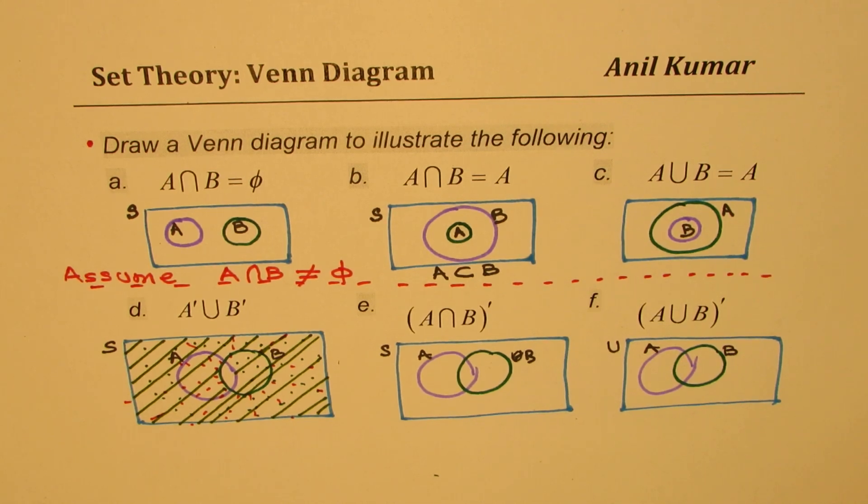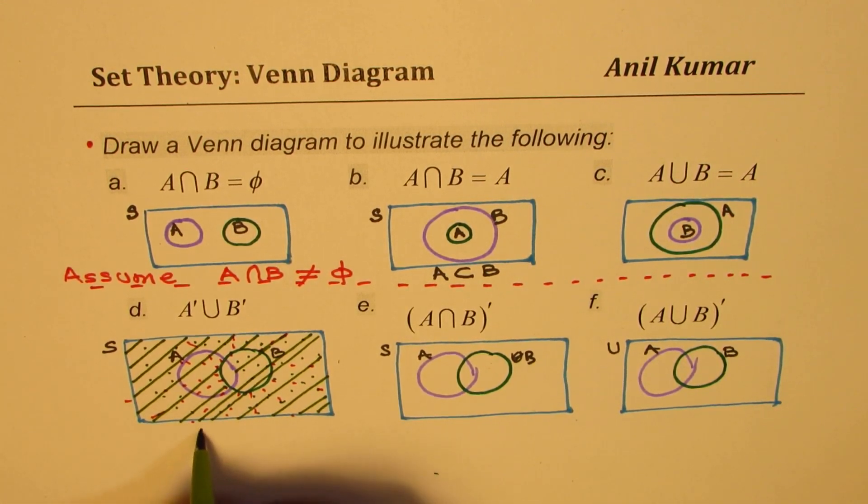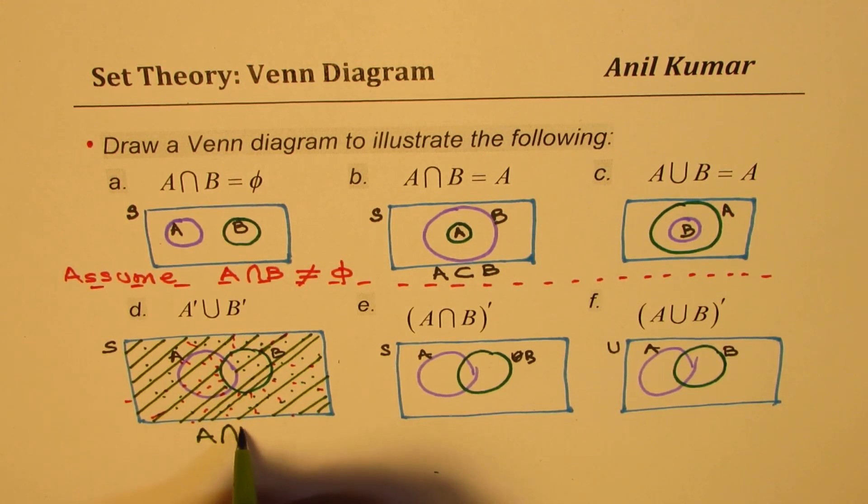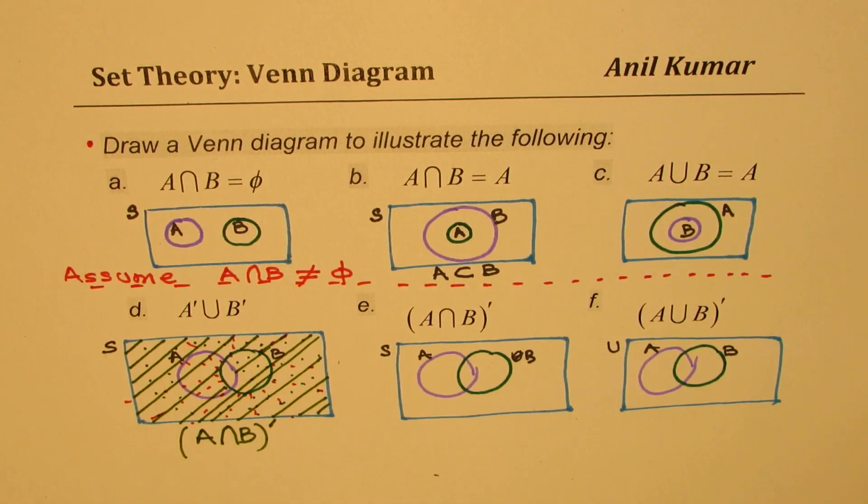So the union is A intersection of A and B is complement. So that is how you see it.